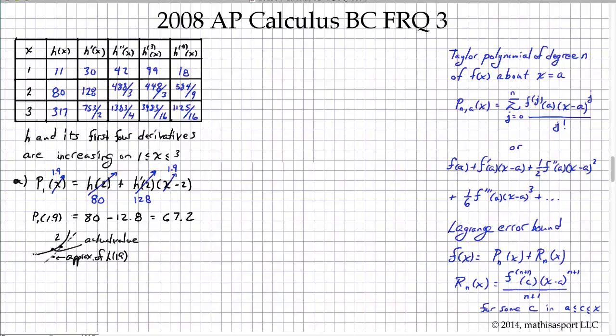And I know that this curve has a positive concavity as well as an increasing slope and so we're just going to say that because h double prime is positive, h prime of x is increasing. And so P1 of 1.9 is an underestimate.